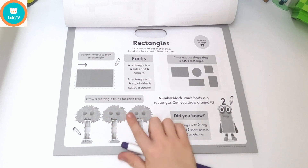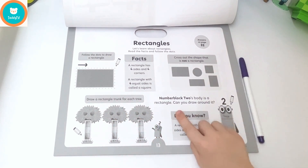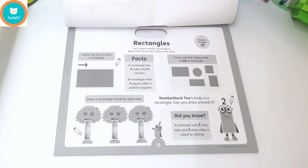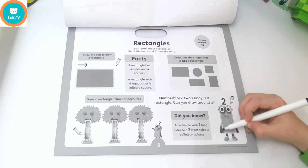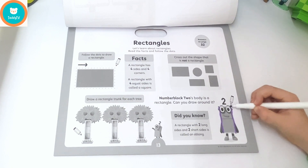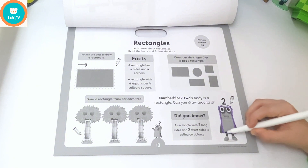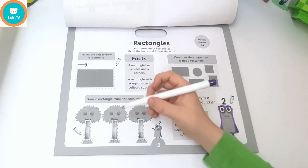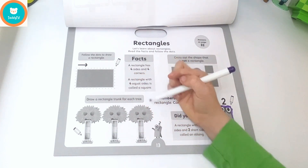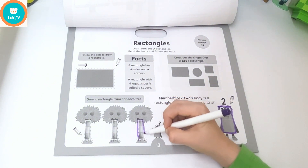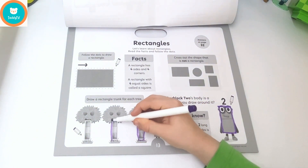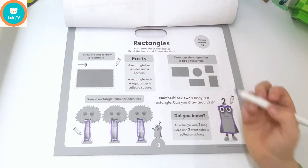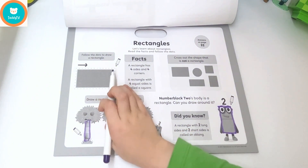Draw a rectangle trunk for each tree. Number Box number two's body has a rectangle in it — can you draw around it? Two long sides, now the short sides. And it's the rectangle! Draw a rectangle trunk for each tree.